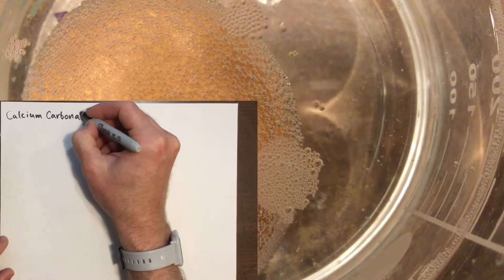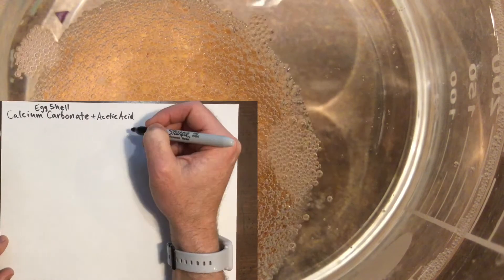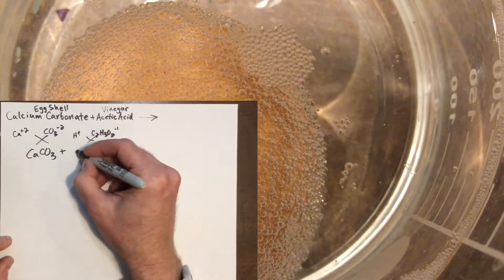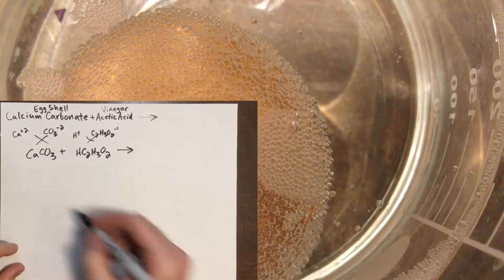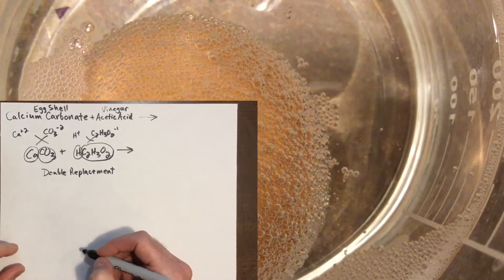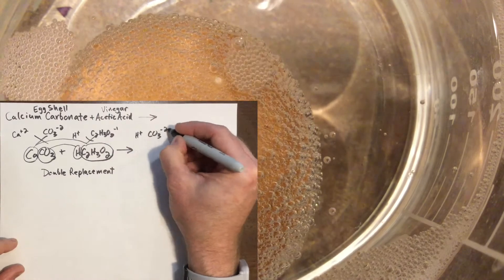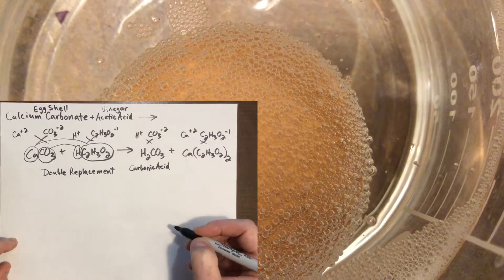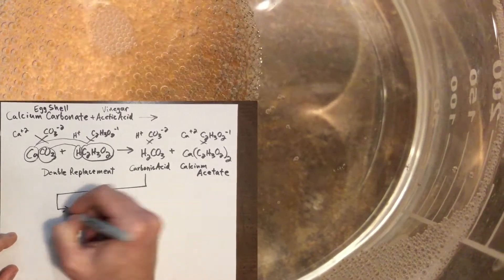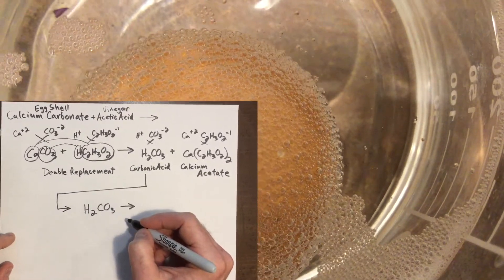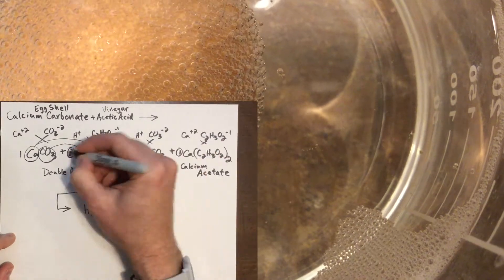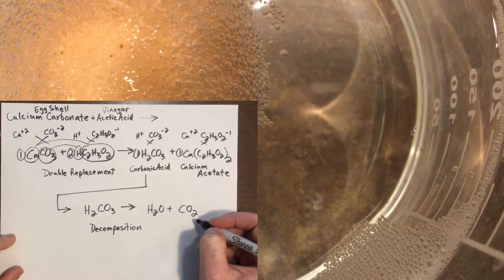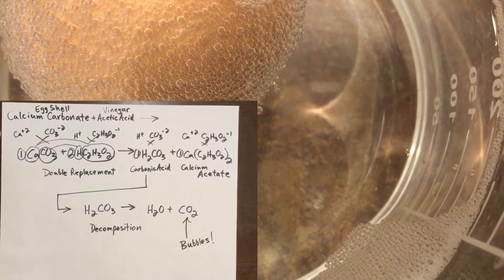Now let's take a closer look at what's actually going on with this reaction. I've got the calcium carbonate, which is the eggshell, and the acetic acid, which is vinegar. I'm going to crisscross those ions to find out what those reactants actually look like and go through a double replacement reaction. When I do that, it ends up making carbonic acid and calcium acetate. I balance the equation, but I'm left with a problem — neither of those two products are gases. So I need to realize that the carbonic acid has to go through another reaction: a decomposition reaction, turning into water and carbon dioxide. That's where our bubbles come from.